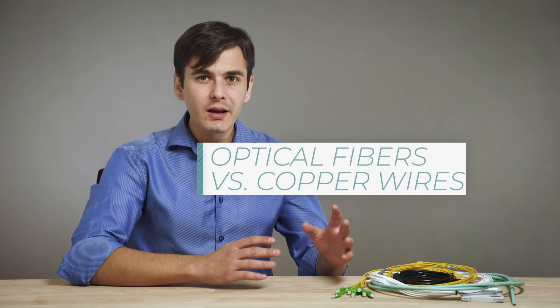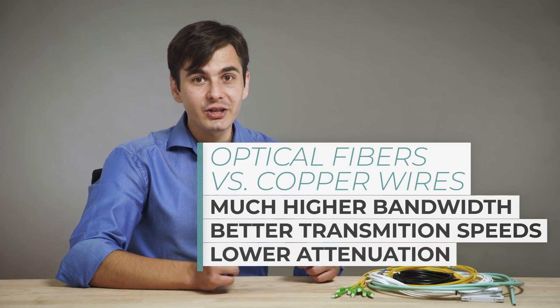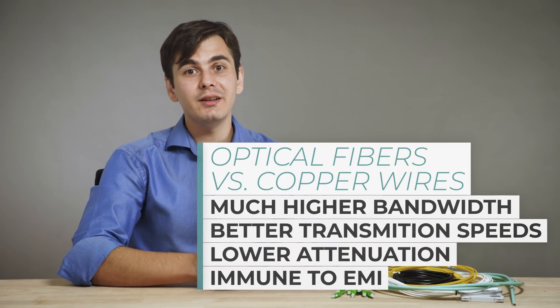In comparison to copper wires, fibers have much higher bandwidth, transmission speeds, lower attenuation and are immune to electromagnetic interferences.